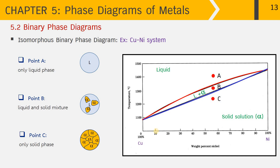The phase diagram tells us at a given composition and temperature what kind of phase we can find. For example, at 30% nickel at a high temperature we have only liquid phase; reducing to 1200°C gives two phases — liquid and alpha solid solution; and at 1100°C we have only solid solution. Now let me go back and explain how the isomorphous binary phase diagram is constructed.